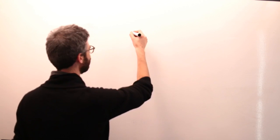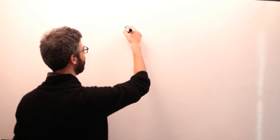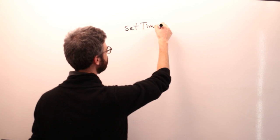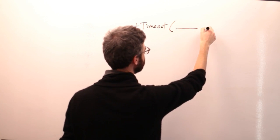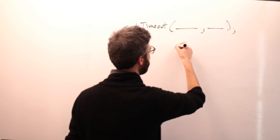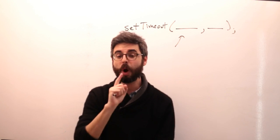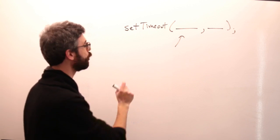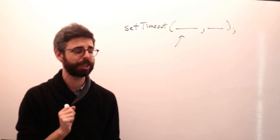First, let me come over here to the whiteboard. I'm just going to take a moment and write the words on the whiteboard: setTimeout. This is a function in JavaScript that accepts two arguments — you are asked to put two arguments inside this function.